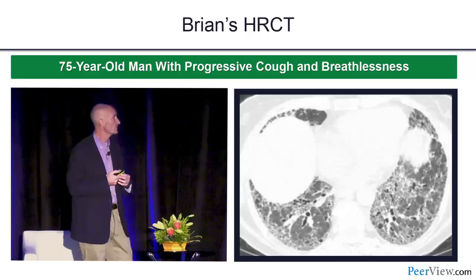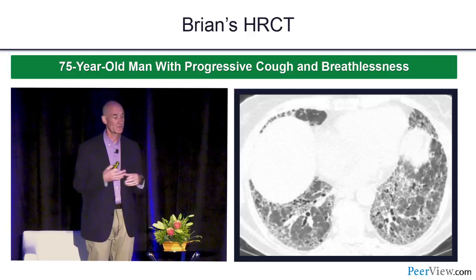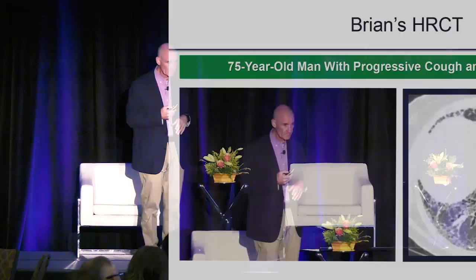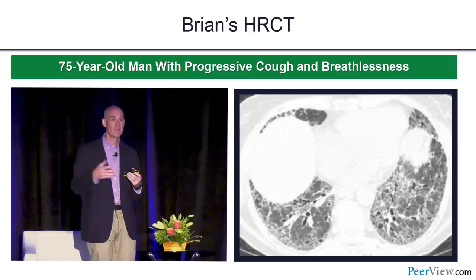Brian's CT falls into the possible UIP pattern. It's in the right distribution — lower lobe cuts with traction bronchiectasis — but there's no honeycombing. So what do we do with Brian? He's 75 years old with mild symptoms of cough and shortness of breath.